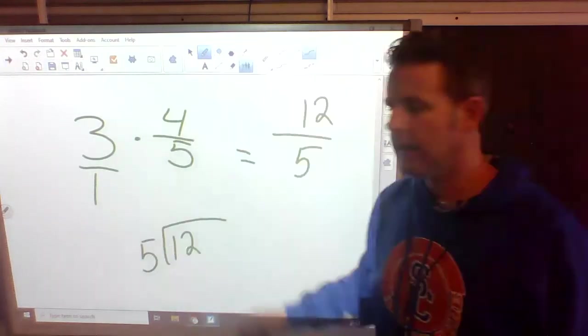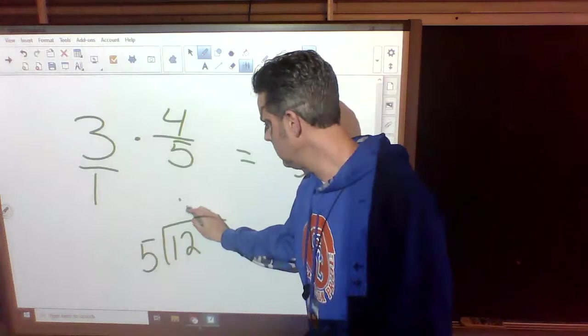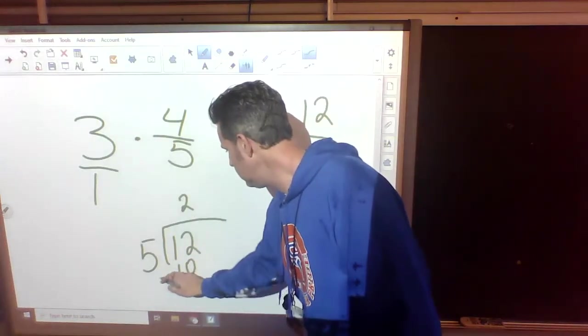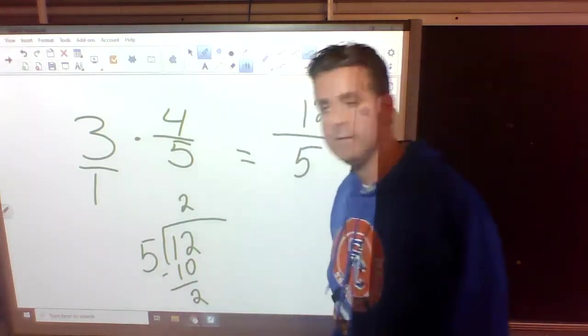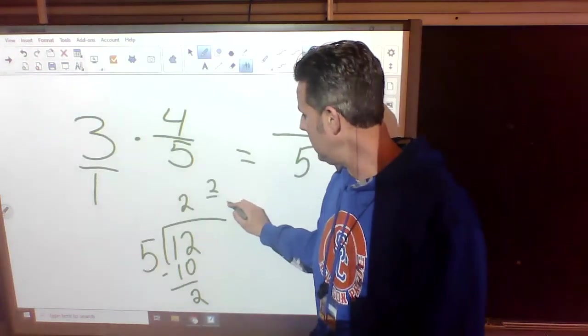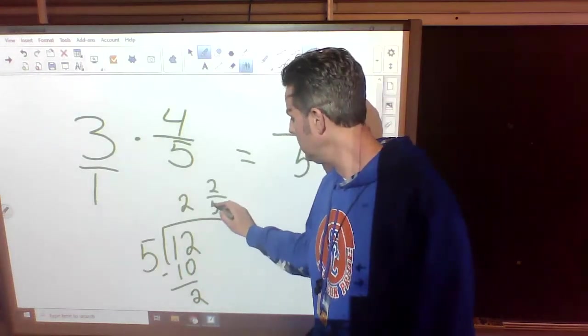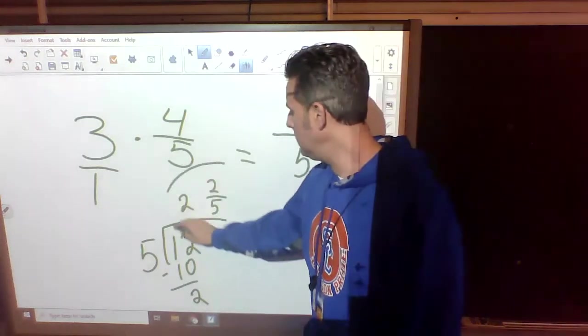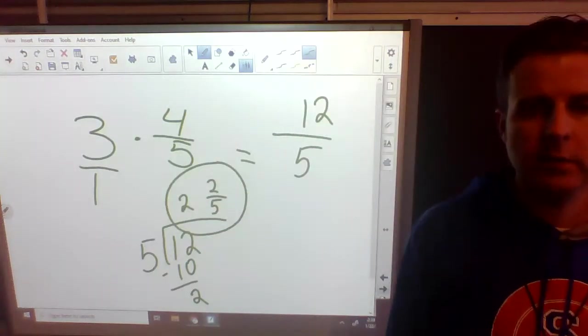So we do 12 divided by 5. How many 5s will fit into 12? 2. 2 times 5 is 10. We subtract. We're left with two pieces. We still have them. We just can't make a whole out of them. So they go on top. Still, our bottom number is 5. So our answer is 2 and 2 fifths.